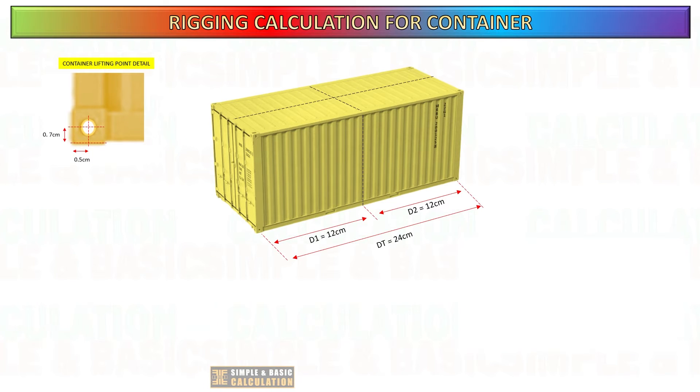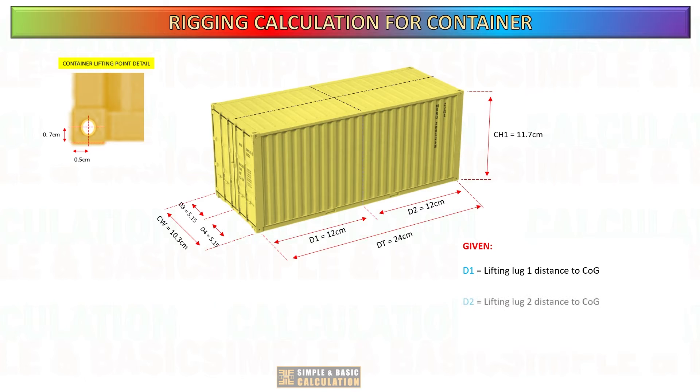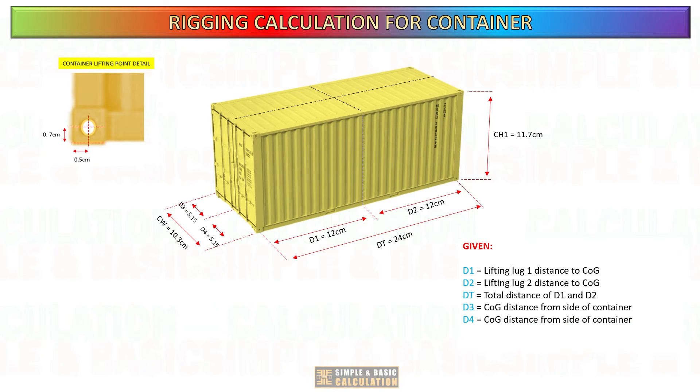The longitudinal distance between two lifting lugs is 24 cm. I assume that the center of gravity of the container is located precisely in the middle. Vertical distance of lifting lug from the top of the container is 11.7 cm. The center of gravity is located exactly in the middle of the transverse direction, with a distance of 5.15 cm to each corner.